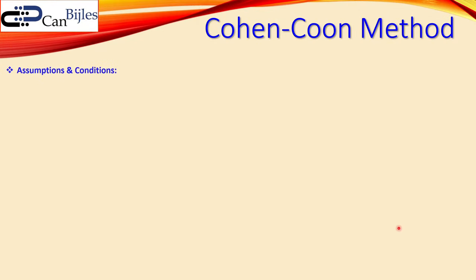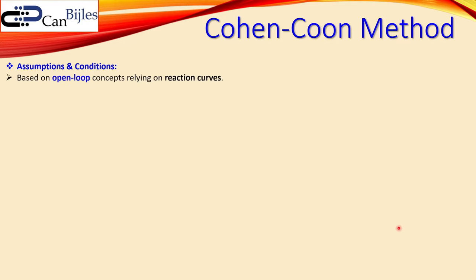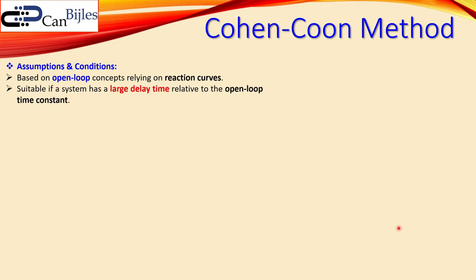Before we move on, I will first want to discuss the method briefly. The assumptions and conditions for this method are the following: it is based on open loop concepts and relies on a reaction curve, so it is only for open loop. It is suitable if the system has a large delay relative to the open loop time constant. For example, if your open loop time constant is one second and you have a large delay of eight or ten seconds, then this is a suitable method to use.